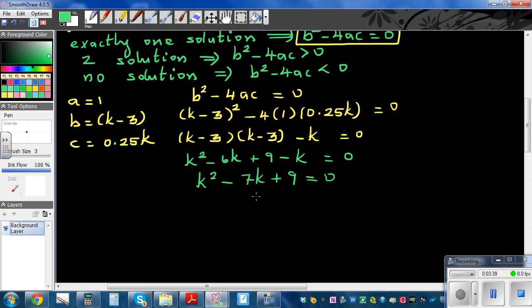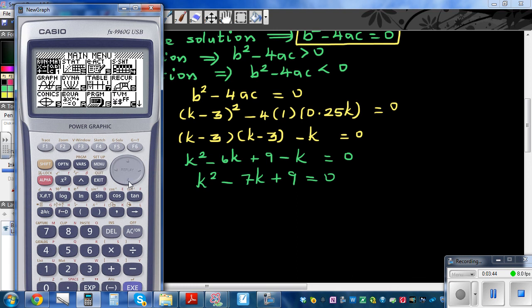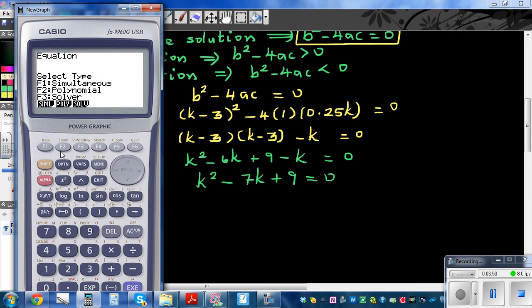So which are the values of k? Let's go to equations, polynomial second degree. So just enter 1, negative 7 and 9. So these are the two values.